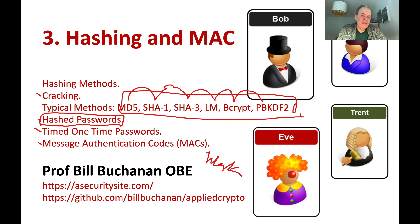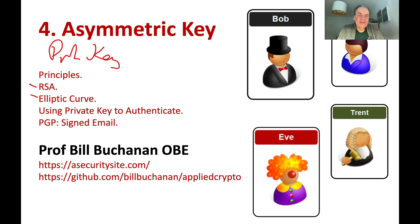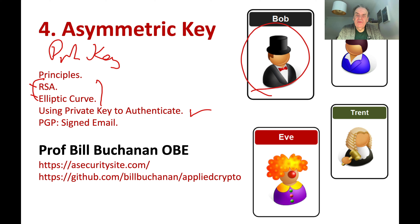MACs allow us to sign a hashed value. Then we'll move on to public key encryption, or asymmetric key encryption. We'll look at three main methods — primarily RSA and elliptic curve — which are used fairly extensively on the internet. We'll see how we can use the private key of an asymmetric key pair to sign and prove that Bob is Bob. Finally, we'll look at how we can sign email to make it more trusted.